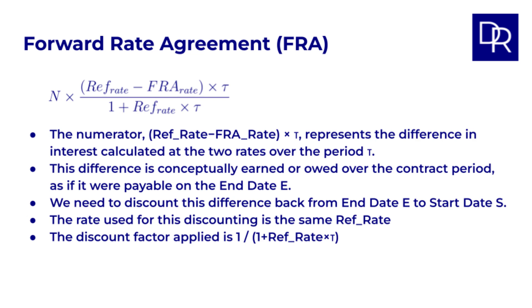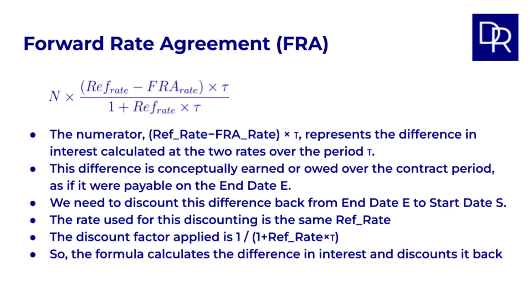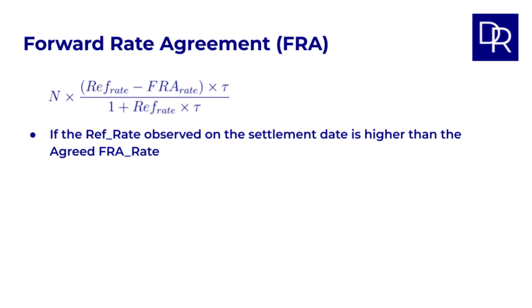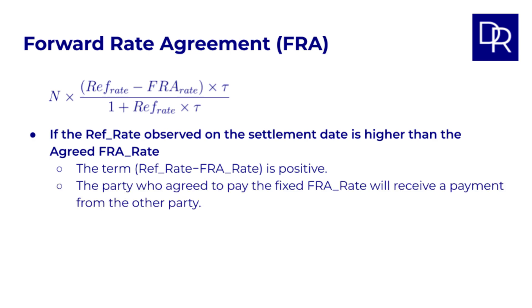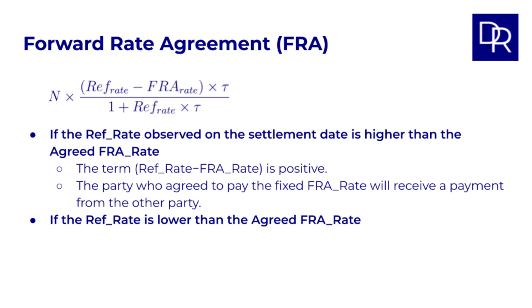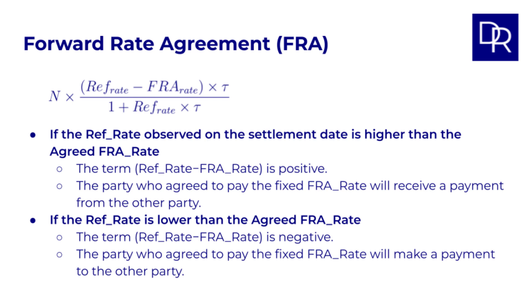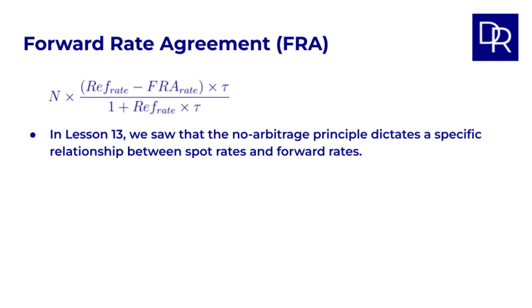If you are unsure about the discounting, watch my time value of money video. So the formula calculates the difference in interest and then discounts it back to the settlement date. If the REF rate observed on the settlement date is higher than the agreed FRA rate, the term (REF rate minus FRA rate) is positive. This means the party who agreed to pay the fixed FRA rate will receive a payment from the other party. If the REF rate is lower than the agreed rate, the term is negative, and that means the party who agreed to pay the fixed rate will make a payment to the other party.